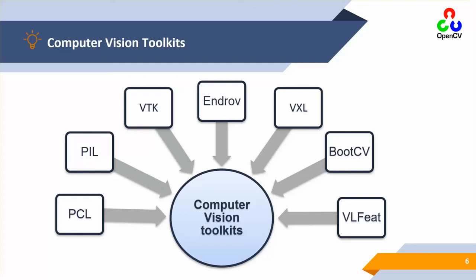VTK is more related to scientific visualization and 3D computer graphics. There is also Androv, an open source plugin architecture aimed at image analysis and data processing. The Point Cloud Library (PCL) is a standalone, large-scale open source library for object detection and image recognition available on cloud servers. PIL, also called the Pillow image library, is a well-known library for image processing. VXL is a collection of C++ libraries designed for computer vision research and implementation.